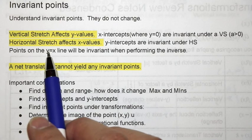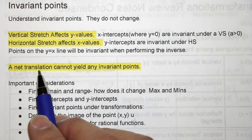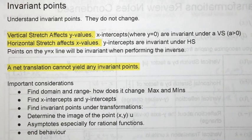If you're talking about an inverse, points on the line y equals x will be invariant when you're talking about the inverse. And of course, if you have a net translation, it cannot yield any invariant points because every point moves.